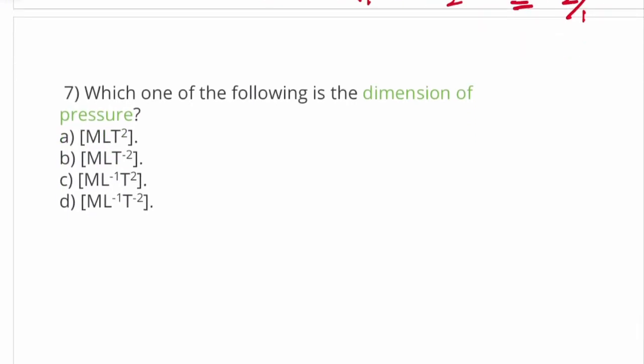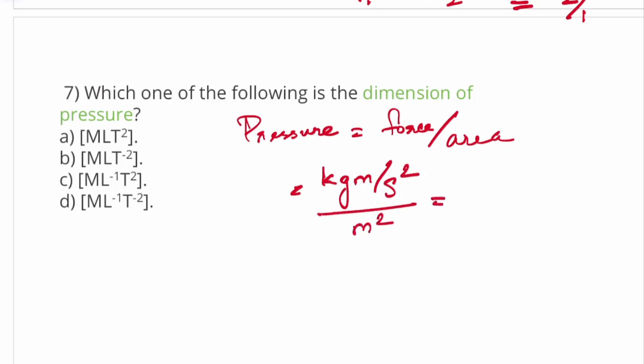Which one of the following is the dimension of pressure? Pressure equals force by area. Force equals kg m per second squared. Area equals m². So in MLT formula, force is MLT⁻² divided by L², which gives M L⁻¹ T⁻². So the option will be D: M L⁻¹ T⁻².